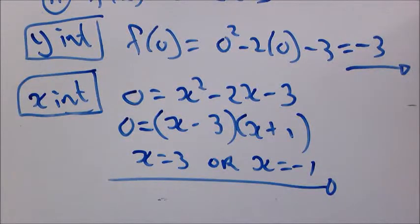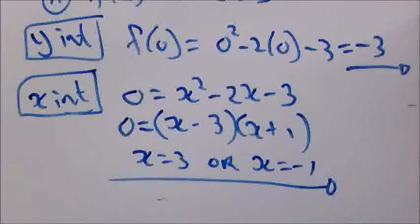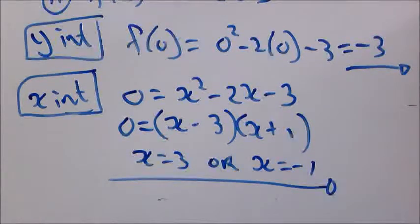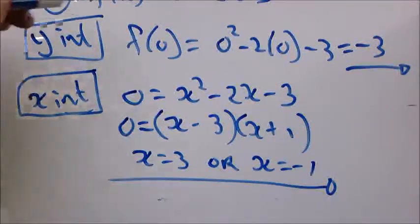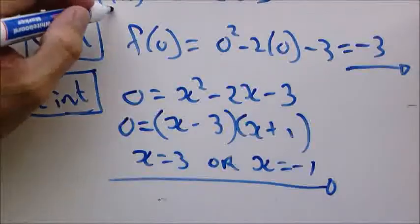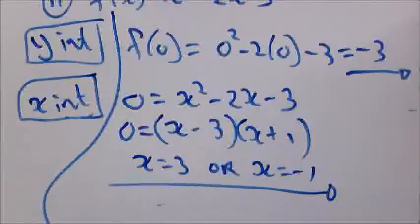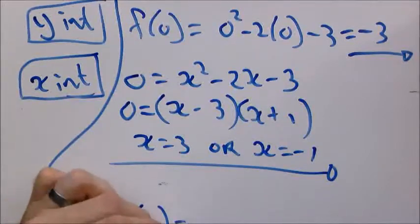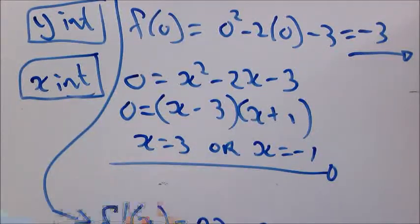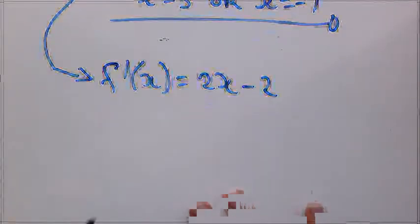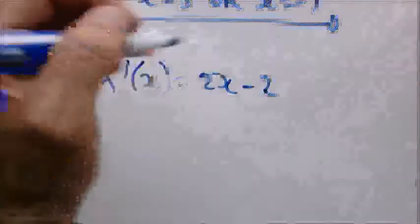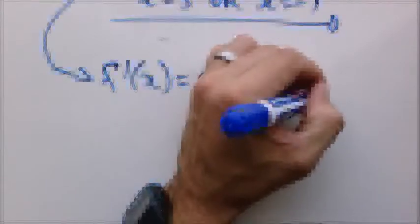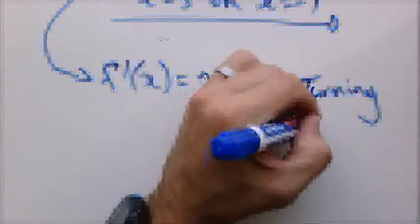Now we just need a turning point. So in grade 11 you would have used the minus b over 2a to get to the X and from there on substitute into the equation to get to the Y. And we're basically doing the same thing except we're using differentiation. So now first things first you get the derivative. And for the turning point the derivative will always be equal to 0.